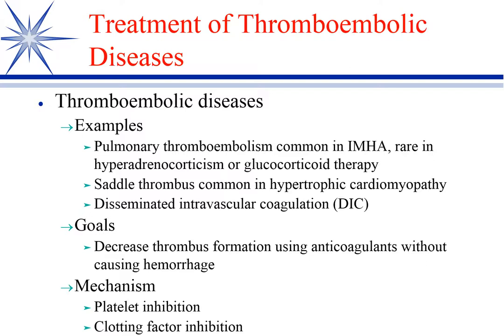The big true clots that we deal with tend to be a saddle thrombus and hypertrophic cardiomyopathy, where the turbulence in the ventricle from septal hypertrophy tends to form thrombi. That can break loose and go anywhere — brain, liver, kidney — but it tends to hit the iliacs and lodge there, cutting off blood flow to the rear legs.